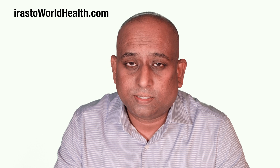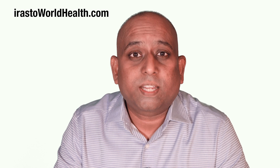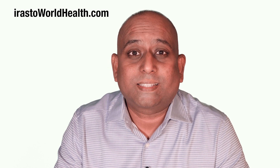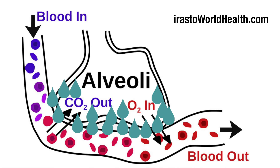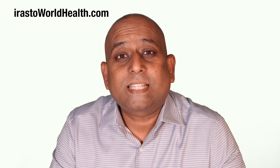So why does SpO2 drop? When a person is infected with SARS-CoV-2, there is inflammation in the lungs. The place where the exchange of gases takes place — the alveoli — is filled with fluid, and there is also collapse of air sacs, which leads to diminished exchange of gases, thereby leading to a drop in oxygen saturation.